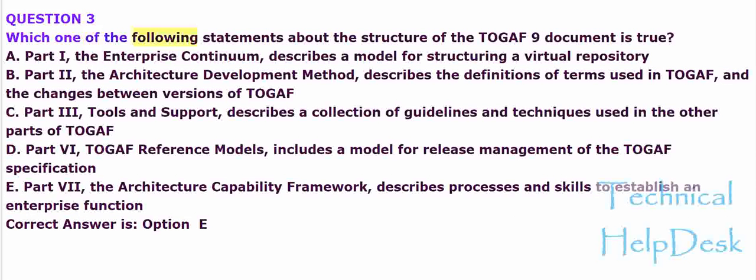Question 3. Which one of the following statements about the structure of the TOGAF 9 document is true? A. Part 1, The Enterprise Continuum, describes a model for structuring a virtual repository. B. Part 2, The Architecture Development Method, describes the definitions of terms used in TOGAF and the changes between versions of TOGAF. C. Part 3, Tools and Support, describes a collection of guidelines and techniques used in the other parts of TOGAF. D. Part 6, TOGAF Reference Models, includes a model for release management of the TOGAF specification. E. Part 7, The Architecture Capability Framework, describes processes and skills to establish an enterprise function. Correct answer is Option E.